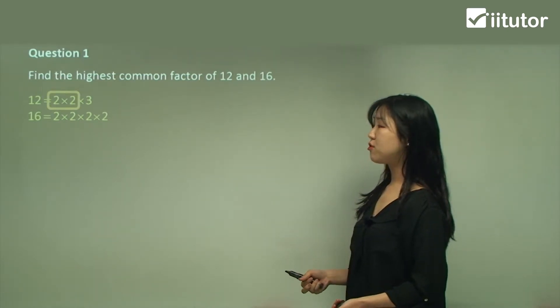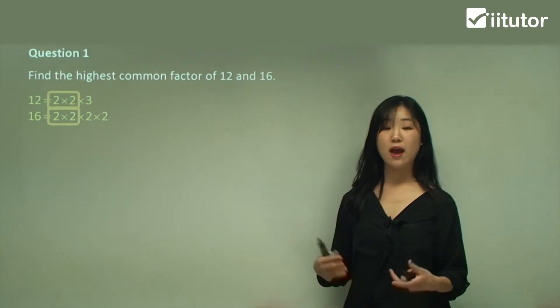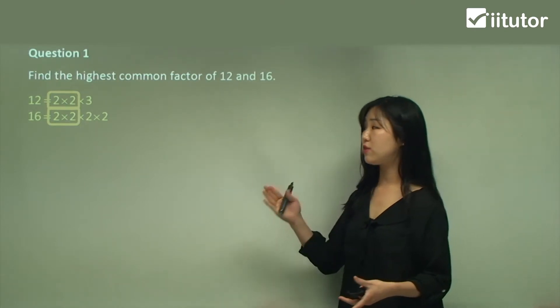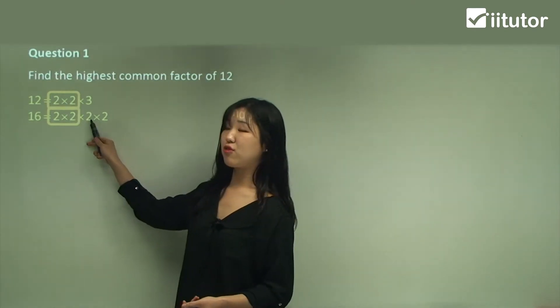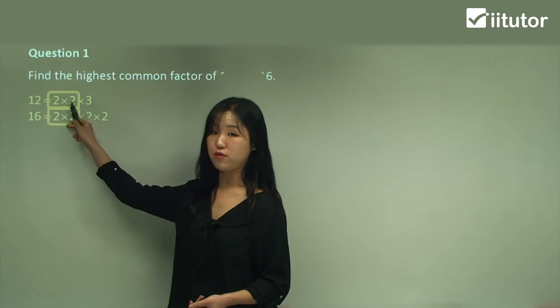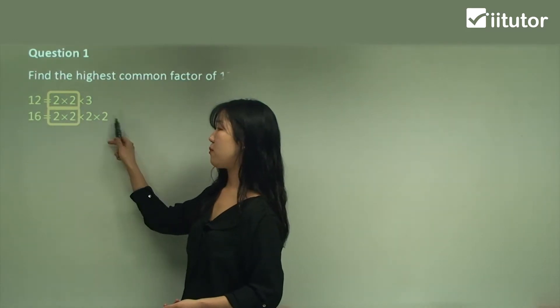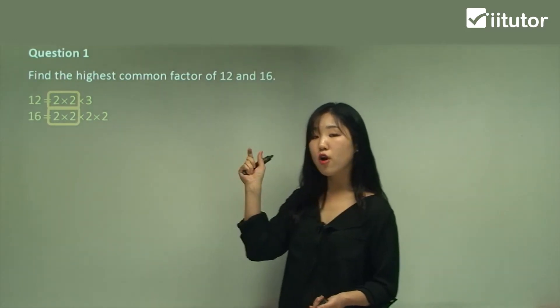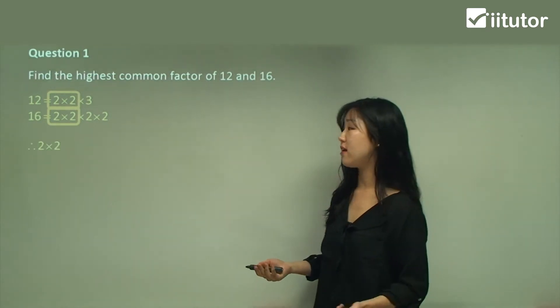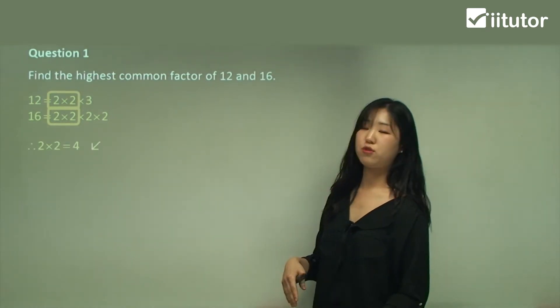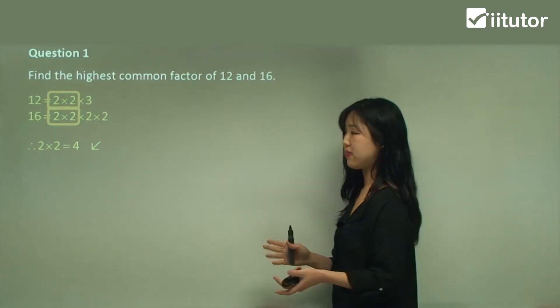I can see that 2 times 2 is also in 16 and 12, so they're both common. But I can't add an extra 2 because there's only 2 lots of 2's here, and I can't add a 3 because there's no 3's here. So only those 2 times 2 makes the highest common factor. 2 times 2 equals 4.